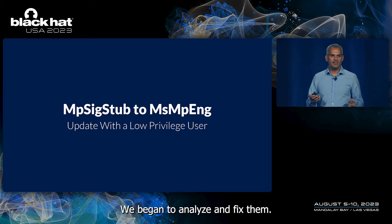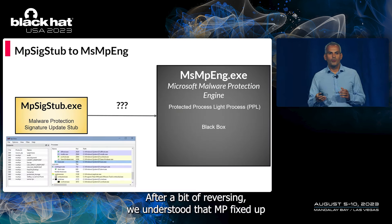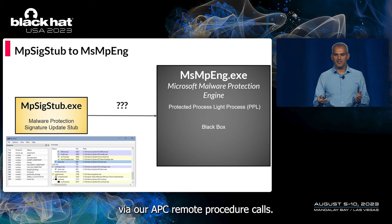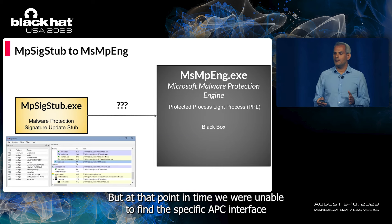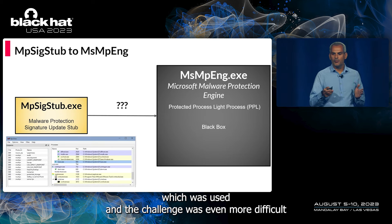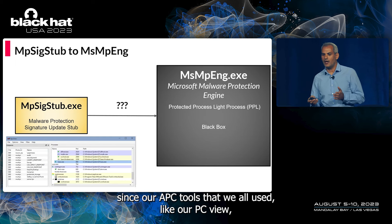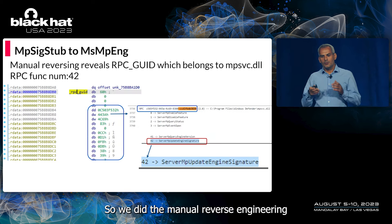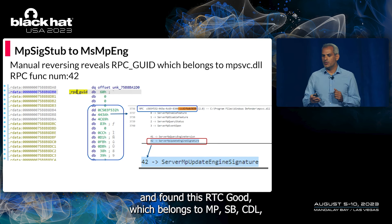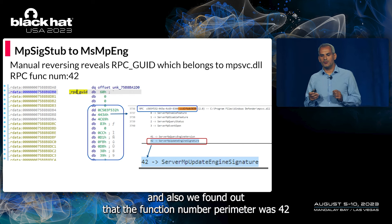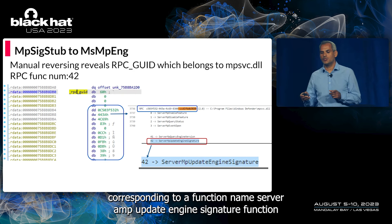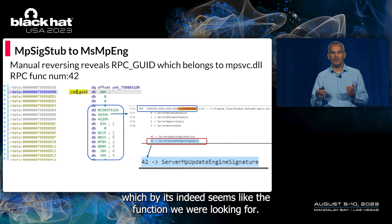We began to analyze MP SigStab. After some reversing, we found that MP SigStab communicates with MsMpEng — the main process of Defender — via RPC, remote procedure calls. We were unable to find the specific RPC interface used at first. The challenge was compounded since RPC tools like RPCView could not display RPC data due to the protected process involved. Through manual reverse engineering, we found the RPC GUID belonging to MpSvc.dll, and the function number parameter was 42, corresponding to a function named ServerMPUpdateEngineSignature, which by its name indeed seems to be what we were looking for.